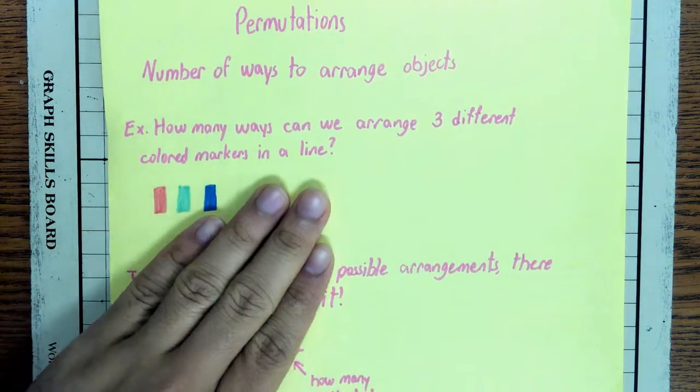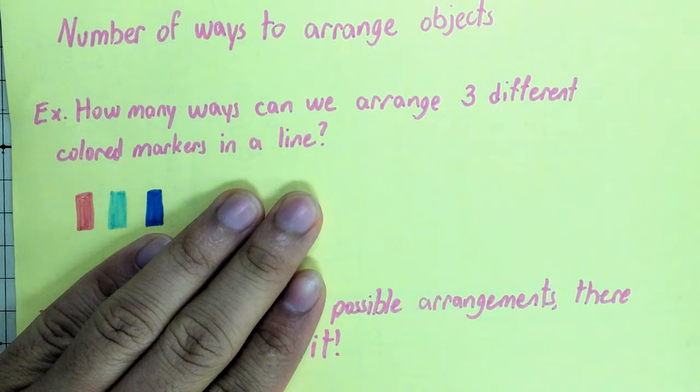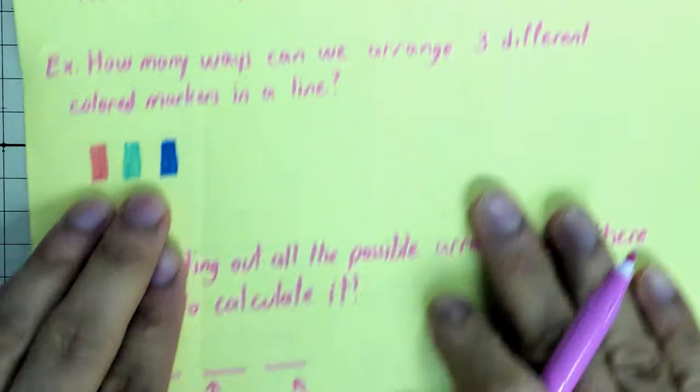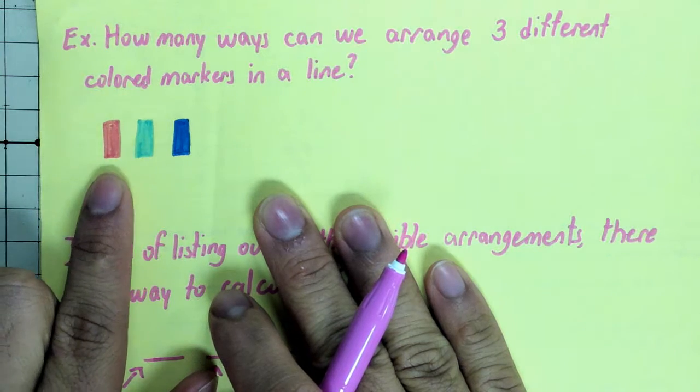So I have an example over here. How many ways can we arrange three different colored markers in a line? So what I mean by that is, right here I have my markers arranged red, green, blue.